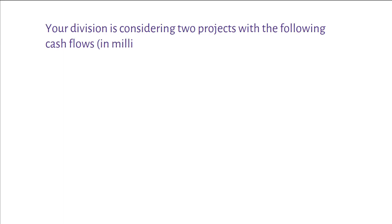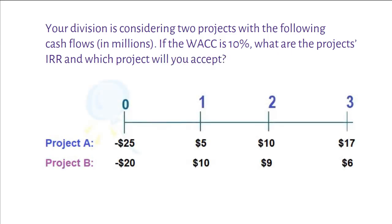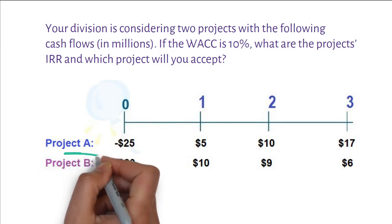Here is an example. Your division is considering two projects with the following cash flows in millions. If the weighted average cost of capital is 10%, what are the project's IRR and which project will you accept?